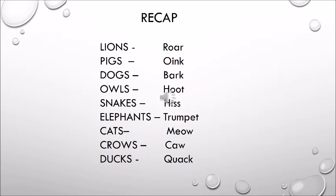So we have learned about all the different animals and the sounds they make. Let's do a quick recap: lions roar, pigs oink, dogs bark, owls hoot, snakes hiss, elephants trumpet, cats mew, crows caw, and ducks quack.